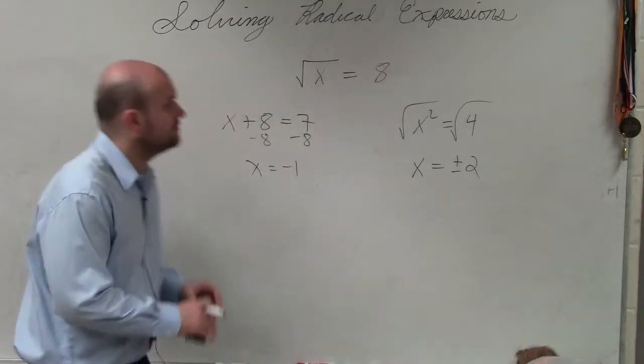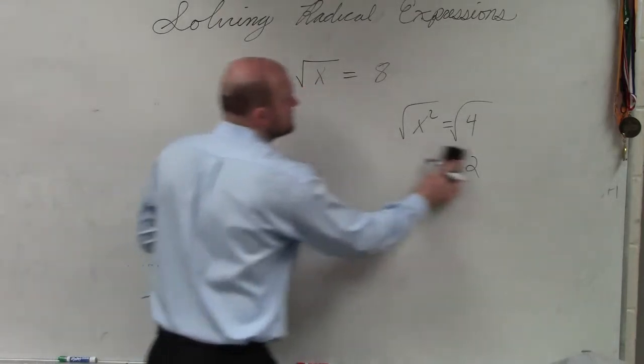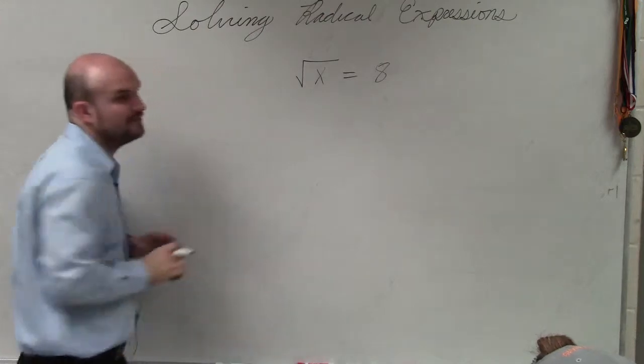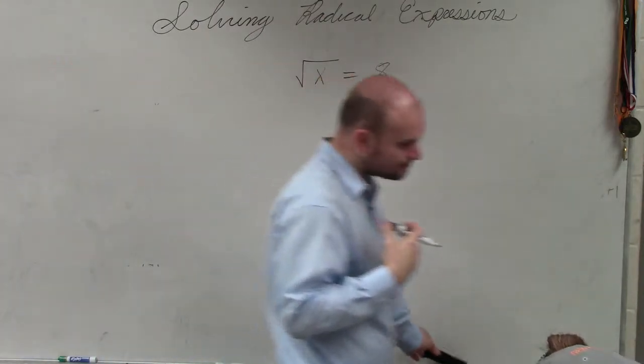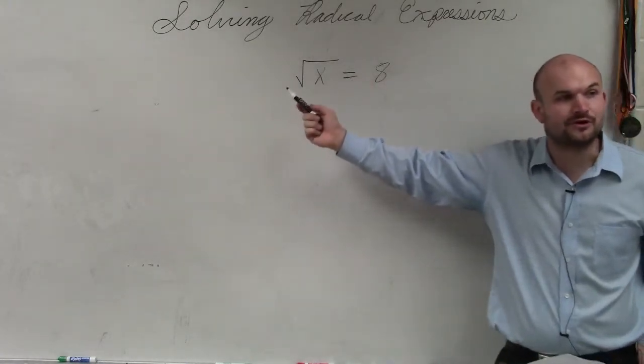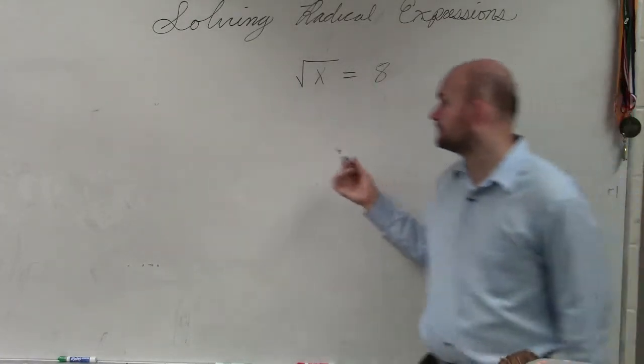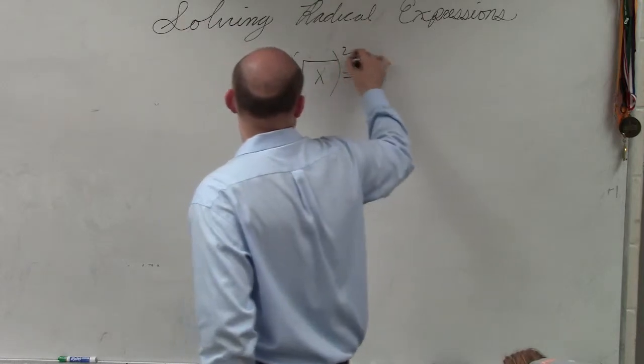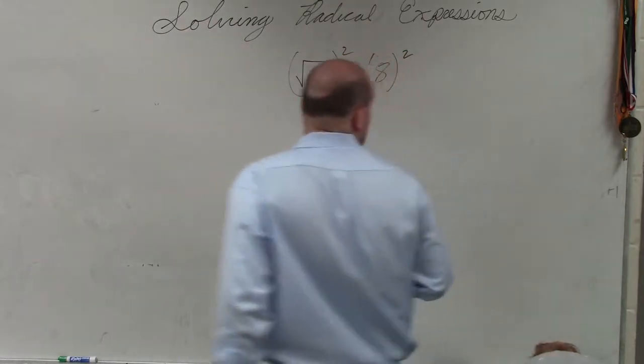Now, in this case, if you guys look at here, I have the square root of x equals 8. So if to undo the squaring was to take the square root, to undo the square root, we would have to square. So basically what we're going to do is square both sides.